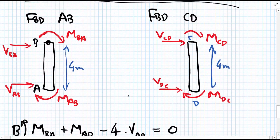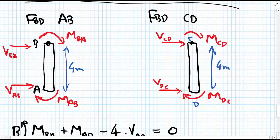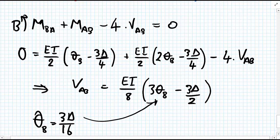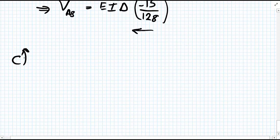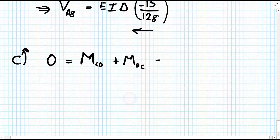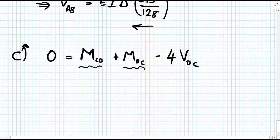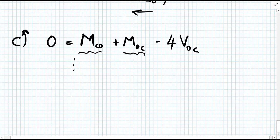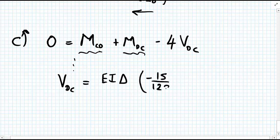We do exactly the same procedure for column CD, taking moments about C: M_CD plus M_DC minus 4 times V_DC equals zero. Substituting for M_CD and M_DC and tidying up, we get V_DC equals minus 15 EI delta upon 128. Again the minus sign means it is pointing to the left.